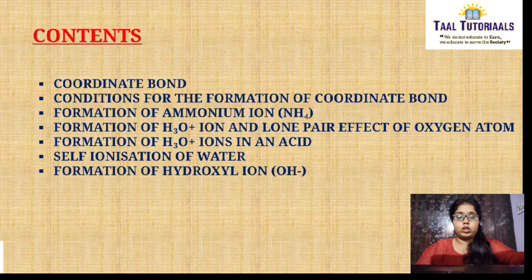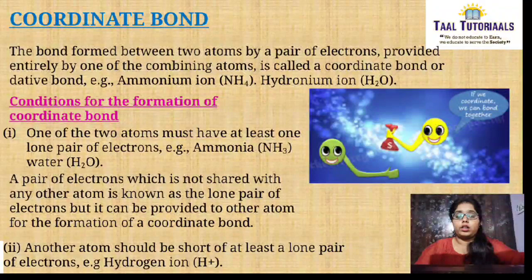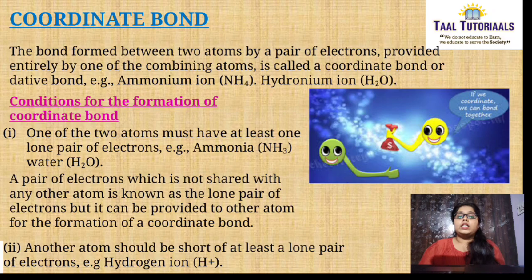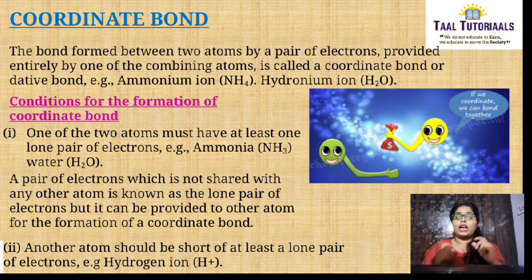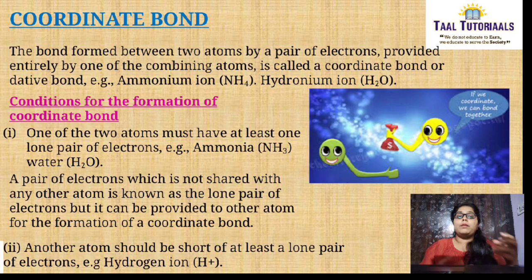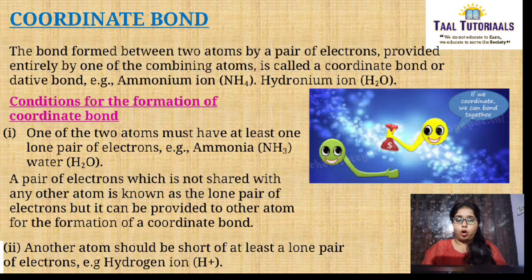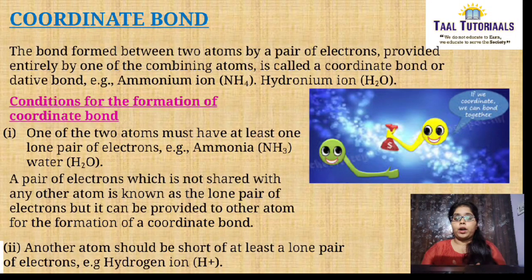First we will know about what is coordinate bond. This is the bond formed between two atoms by a pair of electrons. That pair of electrons is completely provided by one of the combining atoms, and this is known as coordinate bond or it is also known as dative bond. Examples: ammonium ion, hydronium ion.